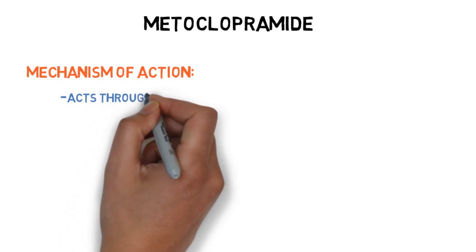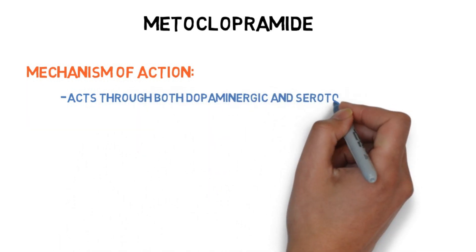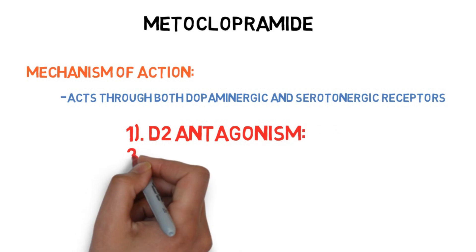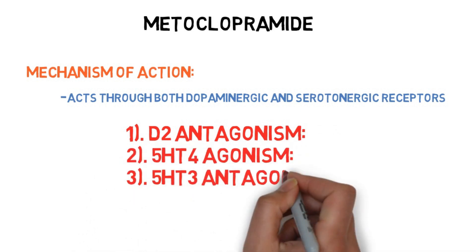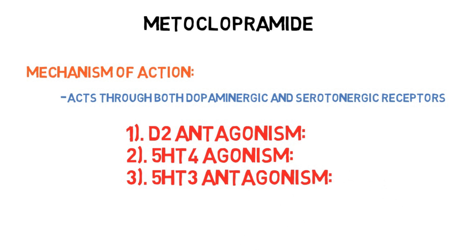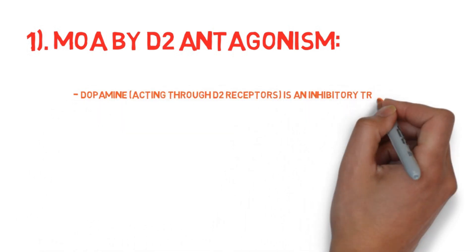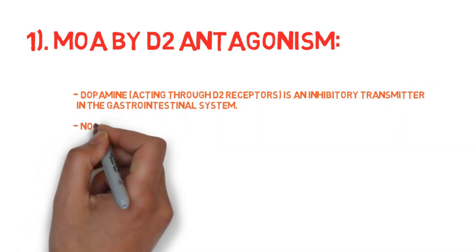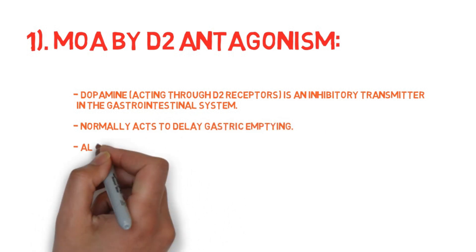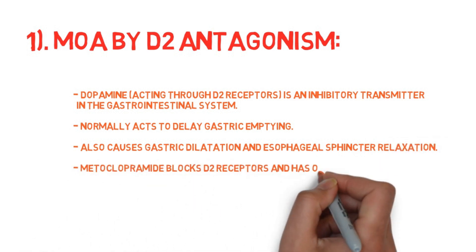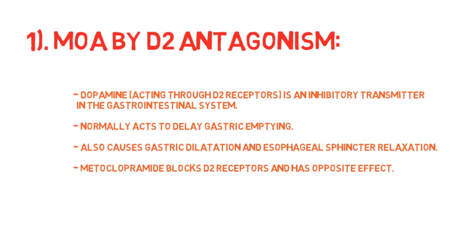Metoclopramide acts through both dopaminergic and serotonergic receptors — that is, D2 antagonism, 5-HT4 agonism, and 5-HT3 antagonism. Regarding D2 antagonism: dopamine acting through D2 receptors is an inhibitory transmitter in the gastrointestinal system, and normally it acts to delay gastric emptying and causes gastric dilation and esophageal sphincter relaxation. Metoclopramide blocks D2 receptors and produces the opposite effect.